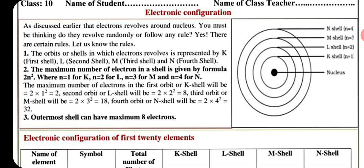As discussed earlier that electrons revolve around nucleus. You must be thinking, do they revolve randomly or follow any rule? Yes, there are certain rules. Let us know the rules.